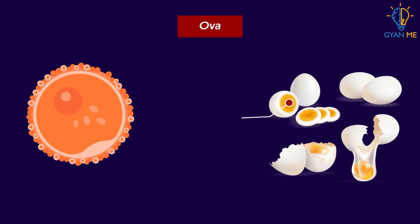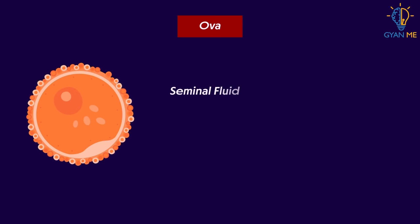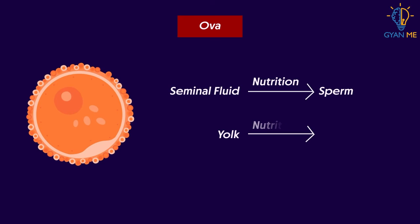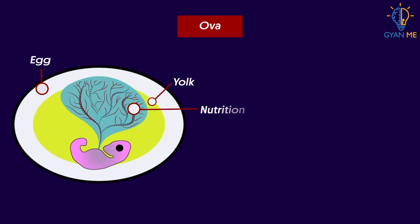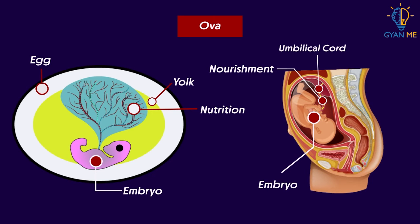Yolk is a nutritious fluid present inside the egg which provides it nutrition. Just like seminal fluid provides nutrition to sperm, yolk provides nutrition to ova — and not only to ova, but also to the developing embryo. In humans, the embryo gets nourishment from the mother's body directly through the umbilical cord, so there is no need for yolk inside the egg, and thus they are almost without yolk.